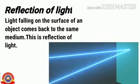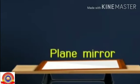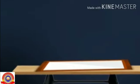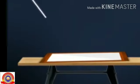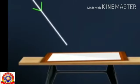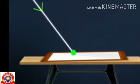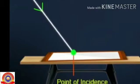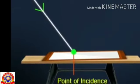Light falling on the surface of an object comes back to the same medium — this is reflection of light, which we already learned. Here you can see a plane mirror, and we know that such a change occurs in accordance with the laws of reflection of light. A light ray incident on a surface is called the incident ray, and the point where it falls is the point of incidence.